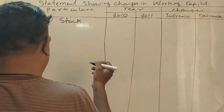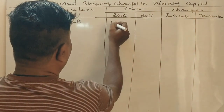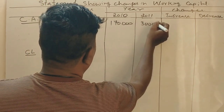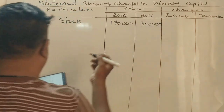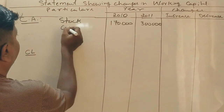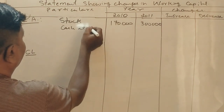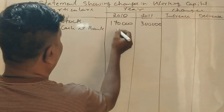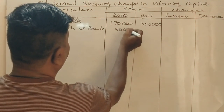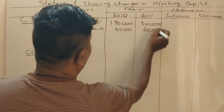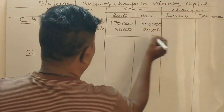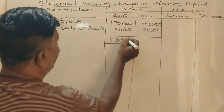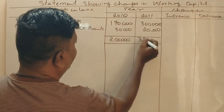Stock values are one lakh seventy thousand and three lakh rupees for 2010 and 2011 respectively. Cash at bank is a current asset — 30,000 and 20,000. The totals are 2,00,000 and 3,00,000 for 2010 and 2011.